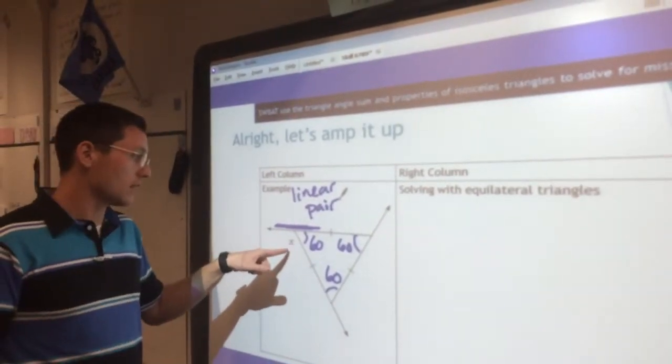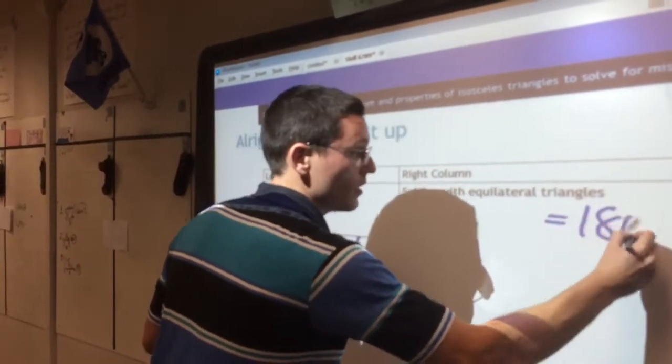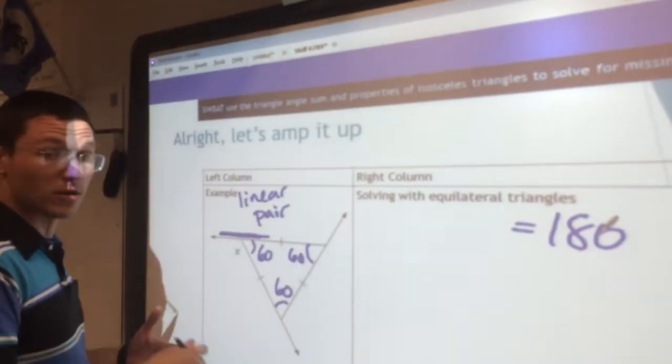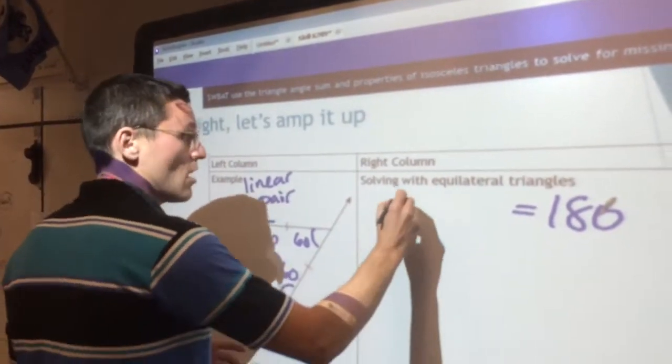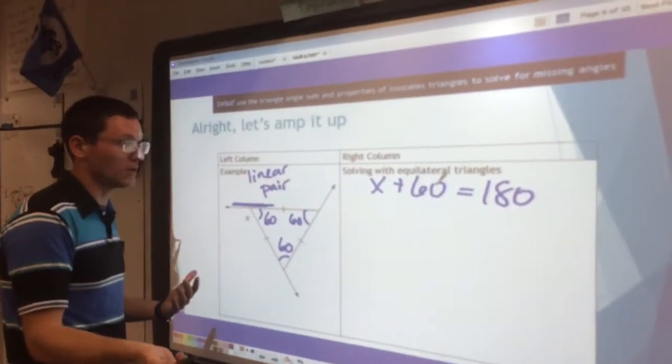So we know that whatever angle this is plus this 60 is going to have to equal 180 because they're a linear pair. So we can write that out with numbers the same way I just said it out loud. Right? Whatever angle that is plus 60 has to equal 180.